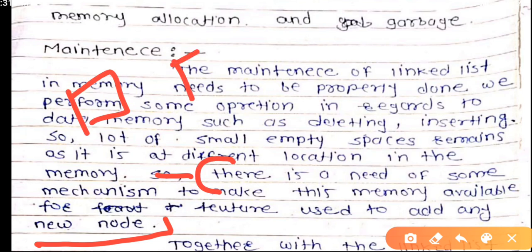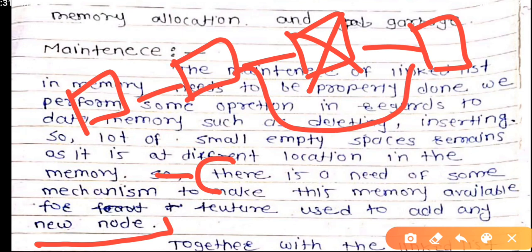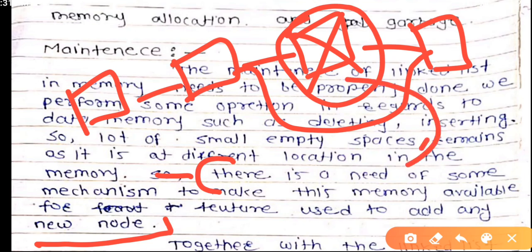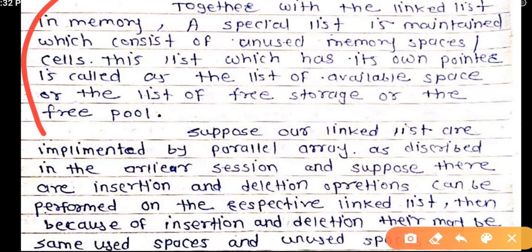Suppose you have a linked list and you want to delete an item from it. Along with deleting, you need to connect the remaining nodes properly. The unused location that is freed must be properly maintained — its address and free location need to be tracked so it can be reused.